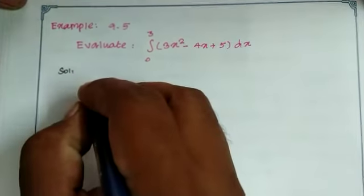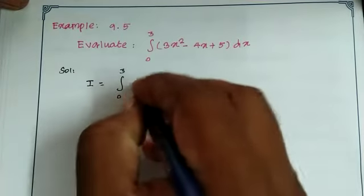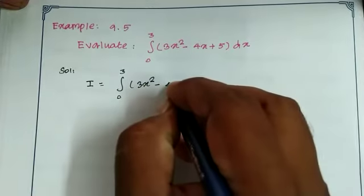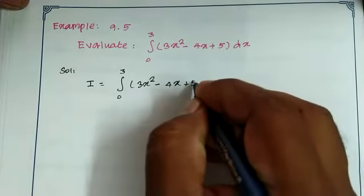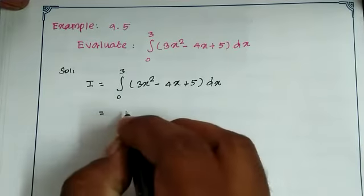Solution: Let I equal the integral from 0 to 3 of 3x square minus 4x plus 5 dx. This is a normal integral.